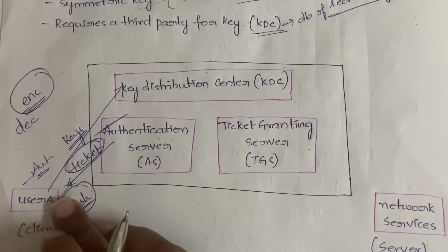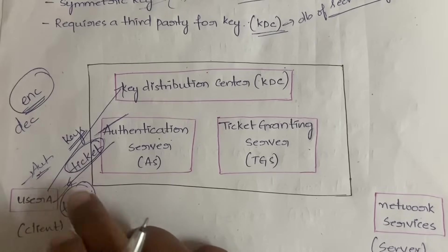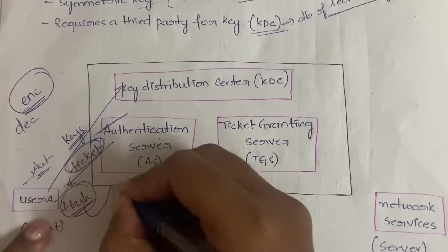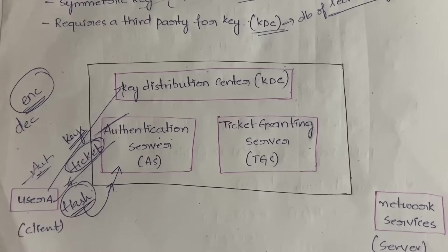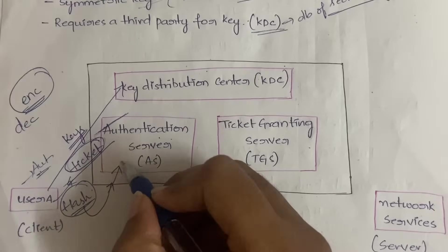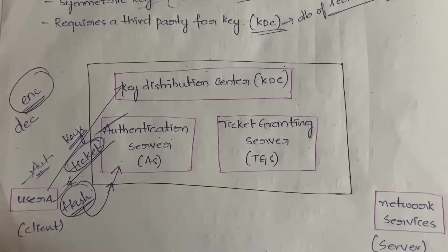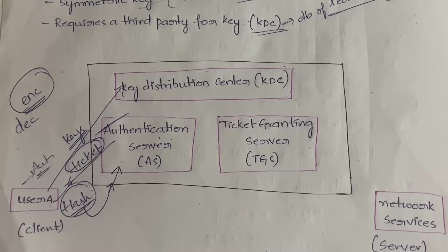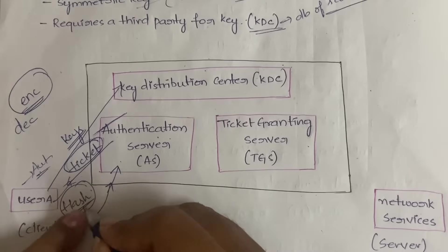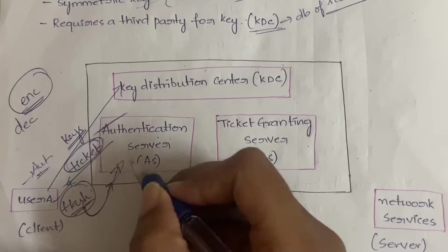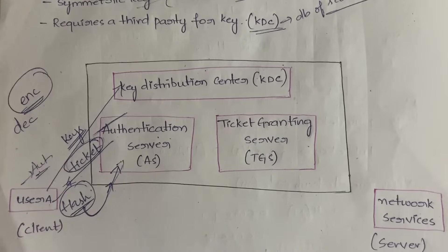Upon decrypting, the user will get the hash code. This decrypted ticket — the hash code — is again sent back to the Authentication Server. The Authentication Server will check for authenticity. If the user is able to decrypt it correctly, it means they are a certified user. If not, they are not an authorized user. The server checks the decrypted message sent back to it.